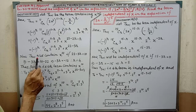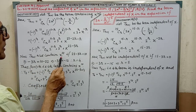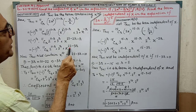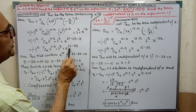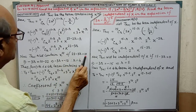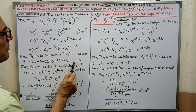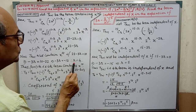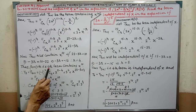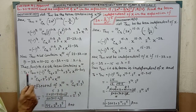T(R+1) will contain x to the power 10 if x to the power 22 minus 3R. So, 22 minus 3R equal to 10. By solving, we are getting the value of R equal to 4. Does R+1, that is the 5th term, contain x to the power 10?